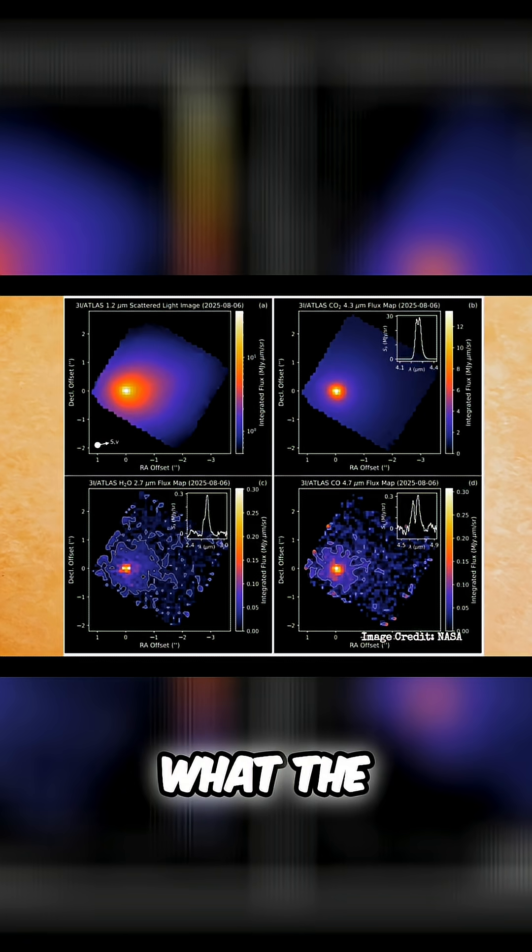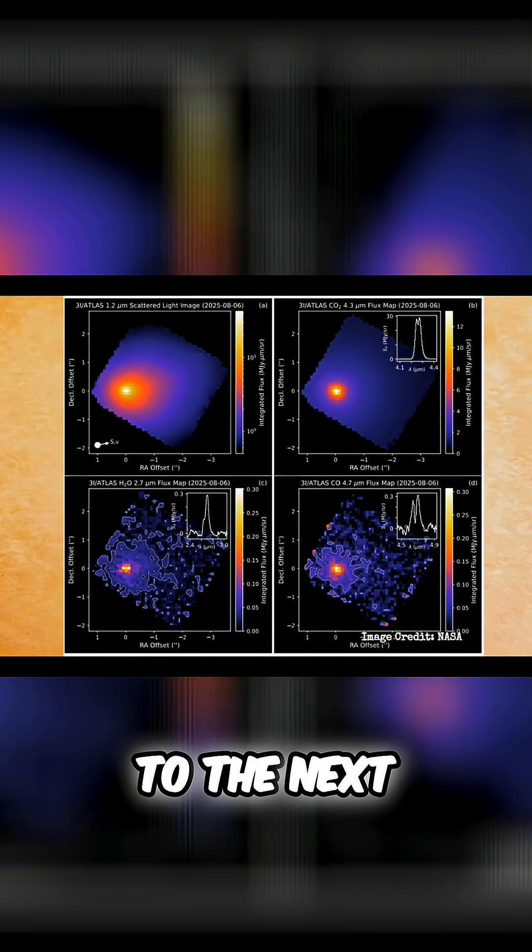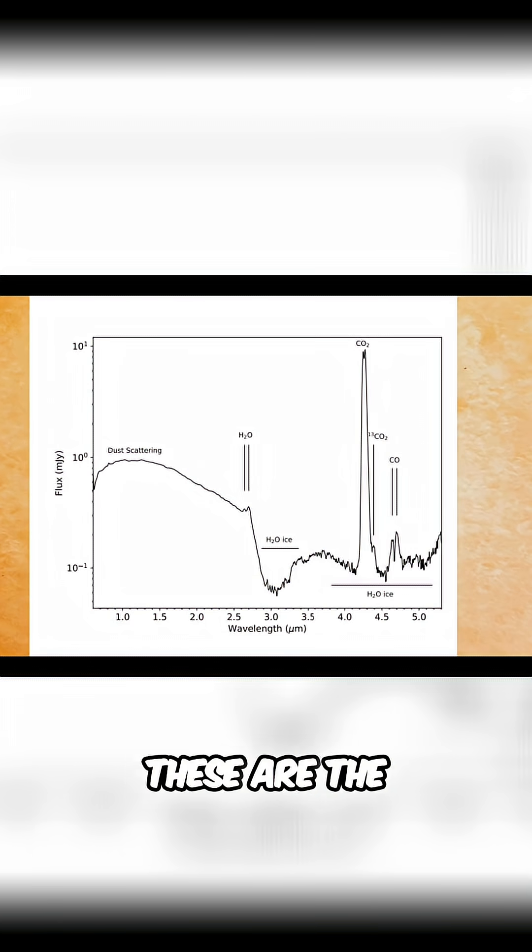But what the JWST spectra found, and you can go to the next slide - these are the different spectra of the dust, the H2O, the carbon dioxide, and the carbon monoxide.